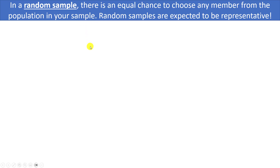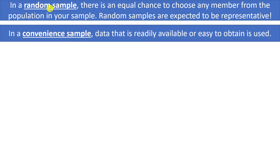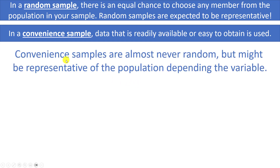But we're not always going to have a random sample. In many cases it's going to be unrealistic — it's very difficult to know where all the individuals are or how to contact everyone in the population. So in many cases you might have some sort of convenience sample, which just means: don't put all that effort into getting an equal chance to choose everyone. Just use data that's readily available or easy to obtain. And sometimes that can be sufficient.